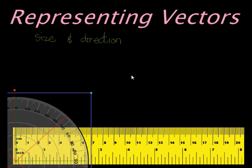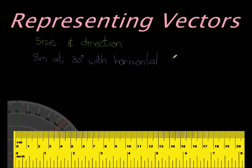So let's look at an example. Let's imagine this is our example. We have 8 meters, that is our size, at 30 degrees. That's our angle with the horizontal.